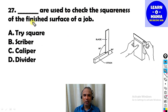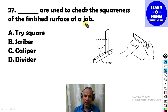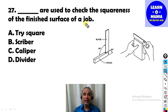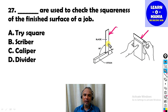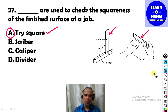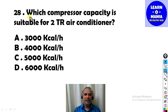Next MCQ: Which instrument is used to check the squareness of the finished surface of a job? To check if the surface is at a right angle — to check squareness — the instrument used is a try square. The answer is try square.